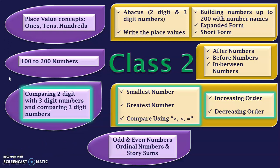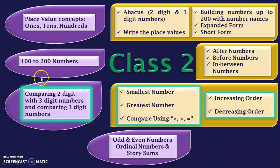Dear viewers, if you are here for the first time, I have explained in detail about each of these learning outcomes in my class 2 learning outcome video. The link is given below in the description box and also in the i-card section. I have dealt with place value concepts in separate videos and the number activities in the numbers 100 to 200 in a separate video. The links are also given below in the description box. In this video we are going to see about comparing numbers.